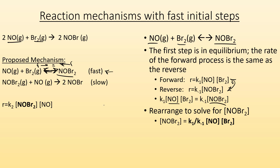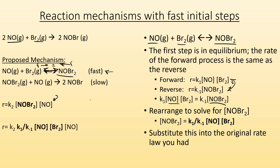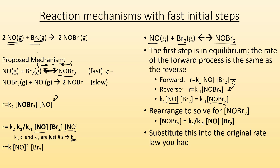Now I can substitute this into my original starting-point rate law expression. I get all these K's: K₂ times K₁ divided by K₋₁. But here's the thing — all those K's are just numbers, they're constants for those processes. Because they're just numbers, we can treat them as just one thing, and that's going to be K. So now we get a rate law expression: rate equals K times NO squared, because I had an NO here and an NO there — combine those, it's to the second power — times Br2. Those are my reactants. I no longer have an intermediate in my expression.